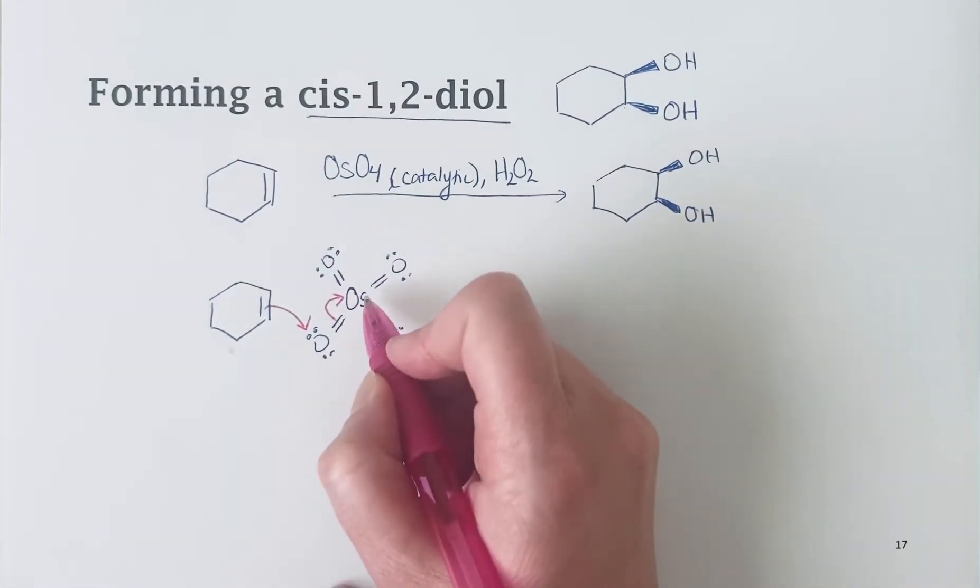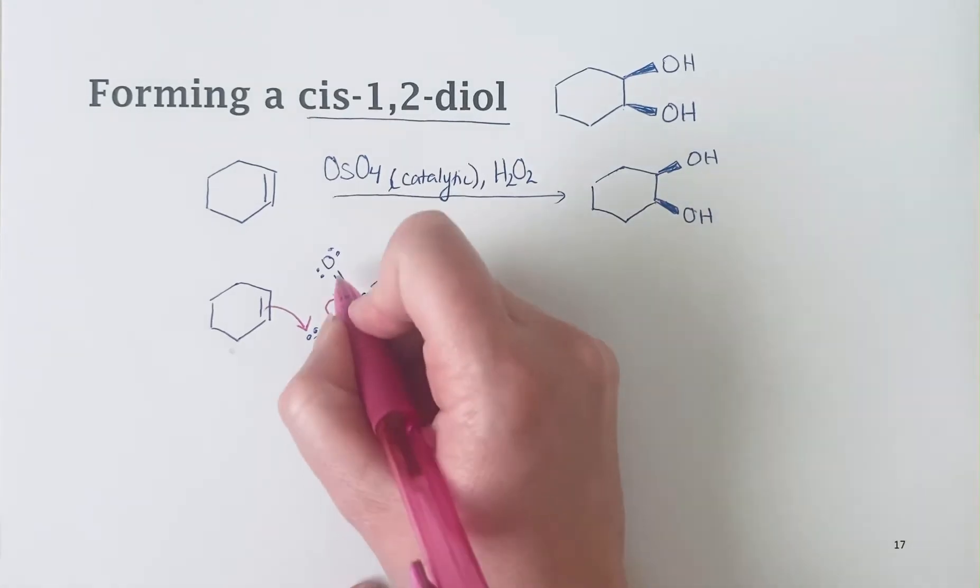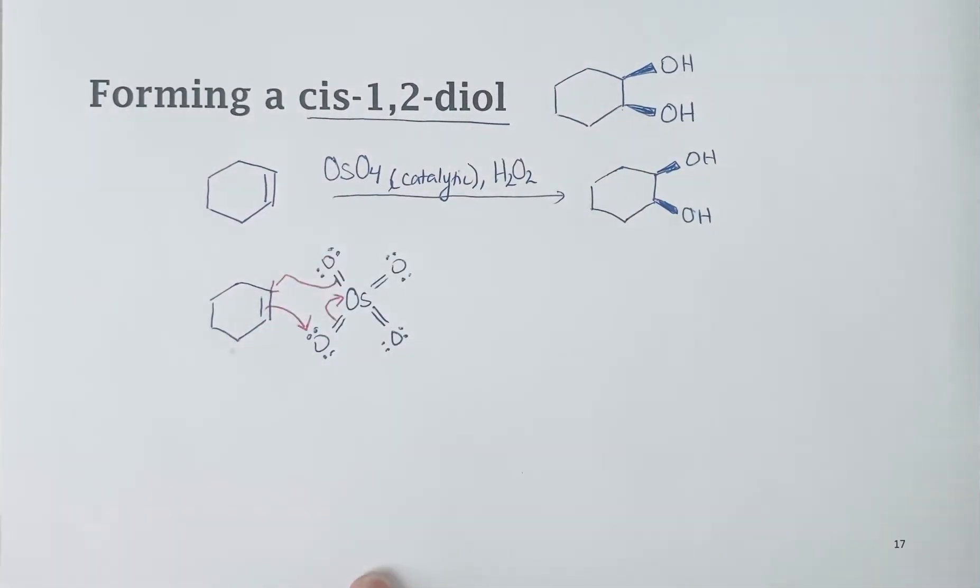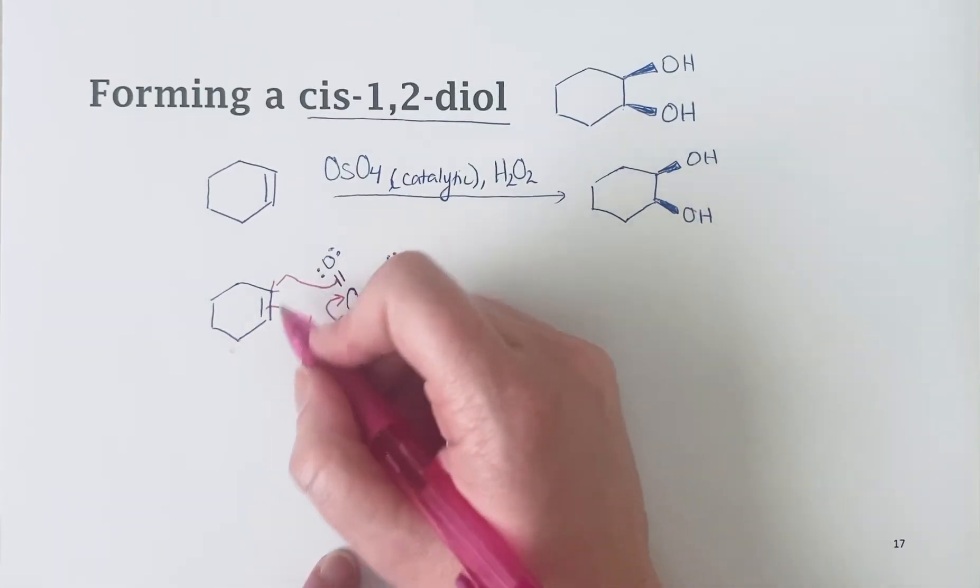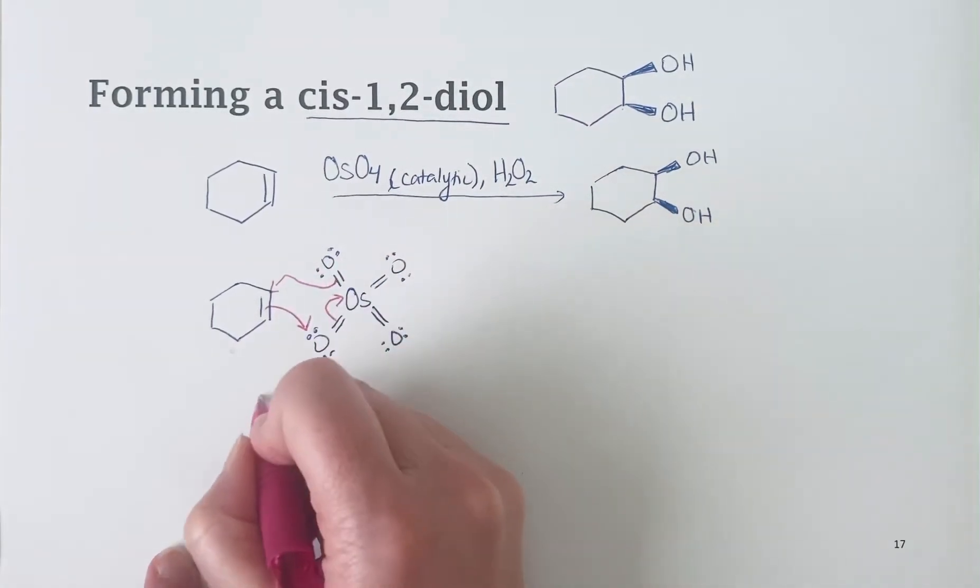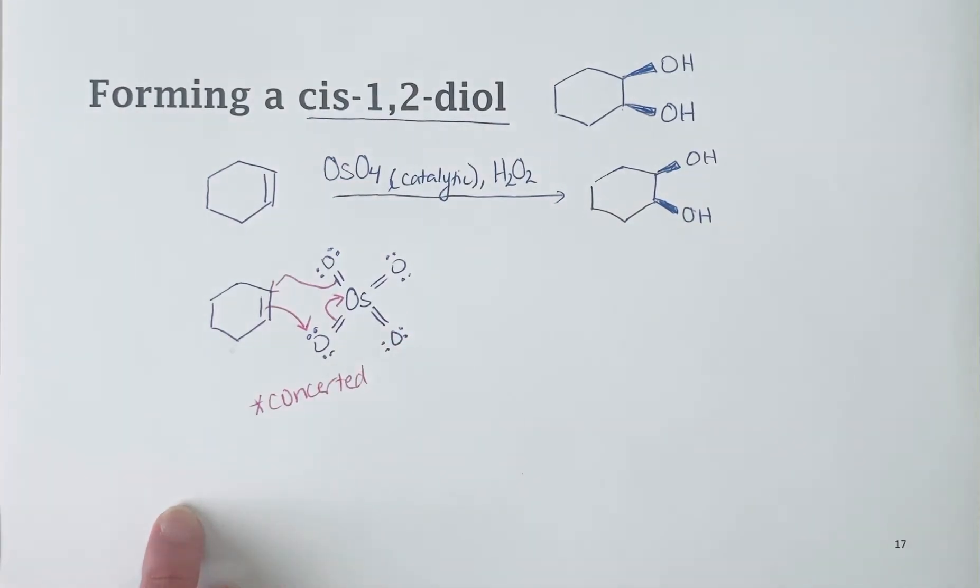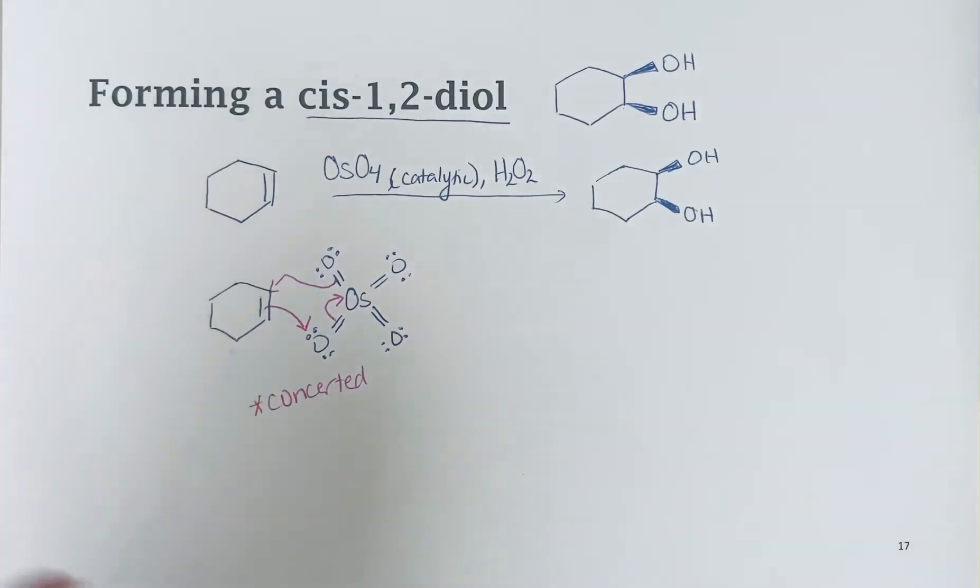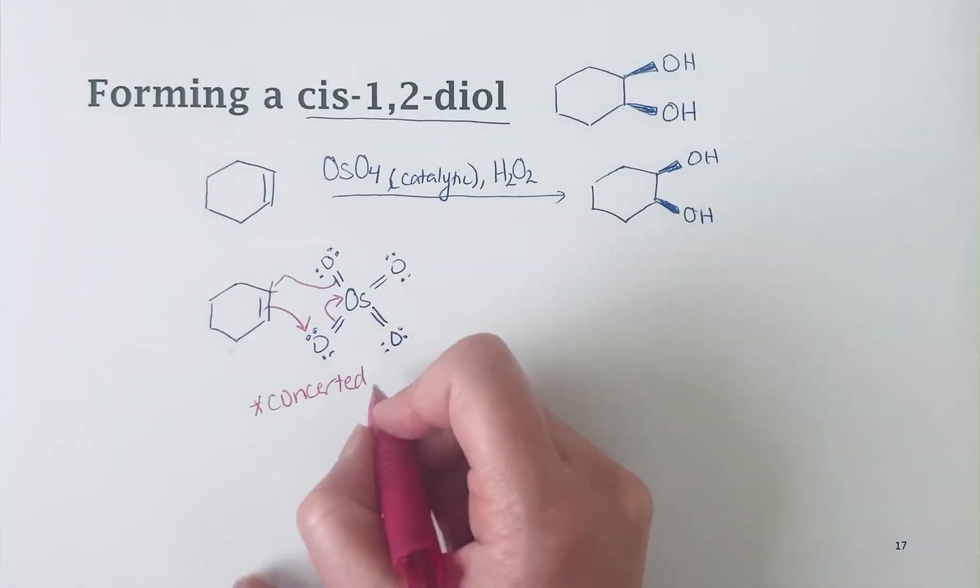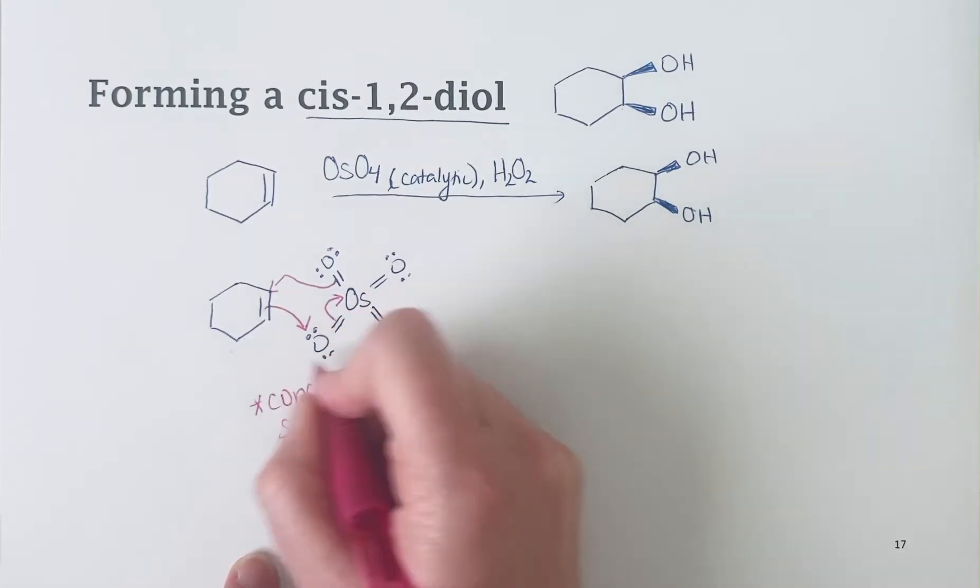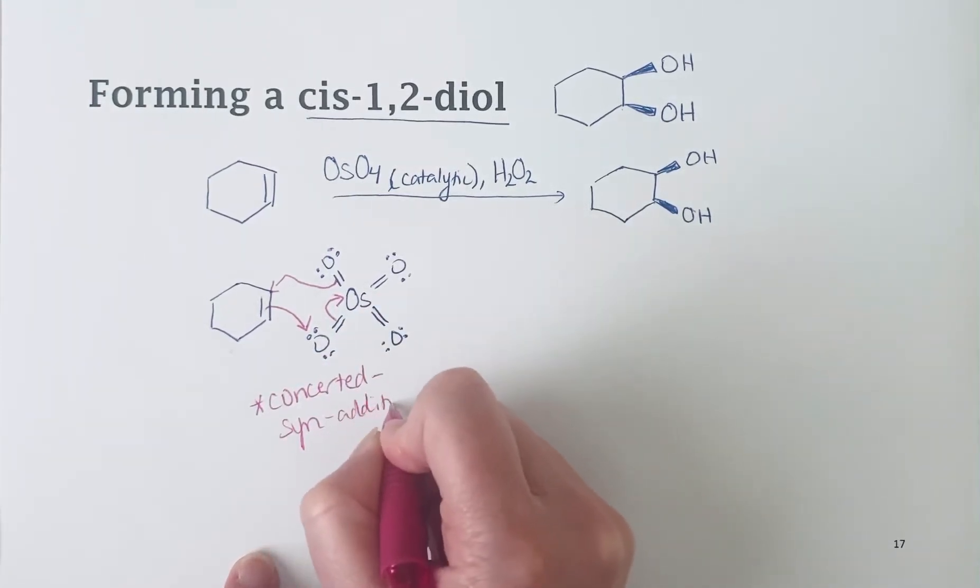If the alkene is being oxidized, something needs to be being reduced and that something is the osmium. Then we form another bond between this oxygen and the alkene. Because this is taking place in a concerted step, there is absolutely no way that those bonds could be anywhere but on the same face of the molecule because it's basically going to come and interact and the bonds are formed at the same time. These concerted additions to alkenes tend to lead to syn addition.